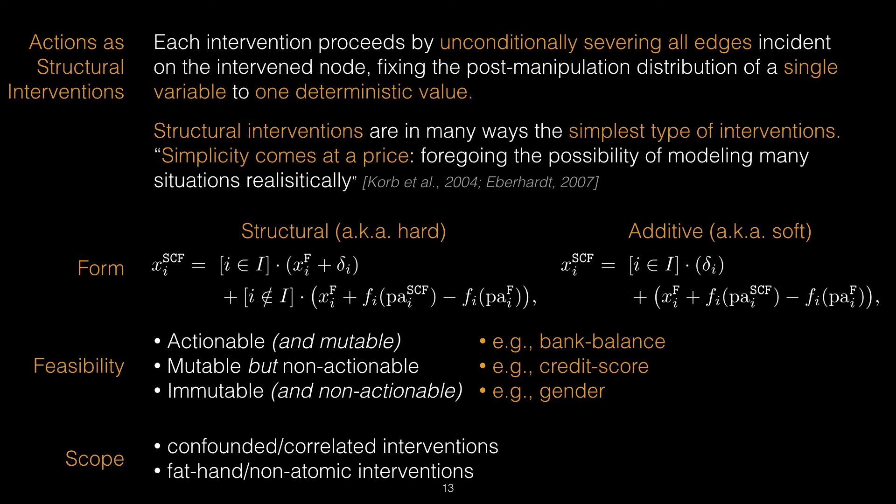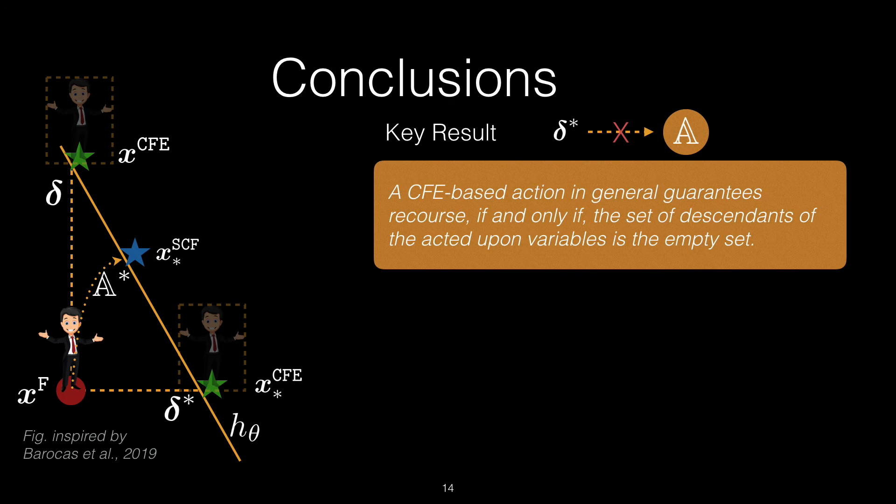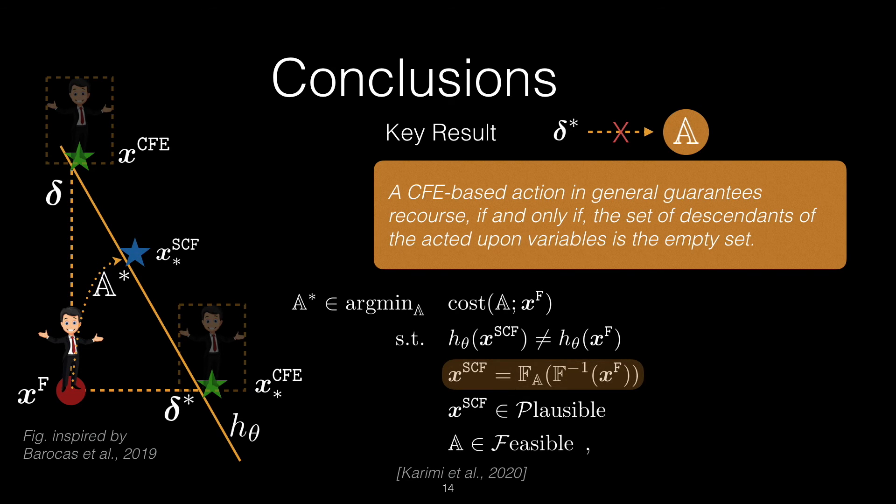In conclusion, we studied the problem of algorithmic recourse, focusing on consequential actions rather than explanations. We showed through examples and in theory that recourse is not guaranteed in general using counterfactual explanations. We argued to reformulate the optimization problem from finding nearest counterfactuals to finding minimum cost interventions that not only account for the actions themselves but also the consequences of those actions, which together lead to more optimal and less costly recourse for the individual.